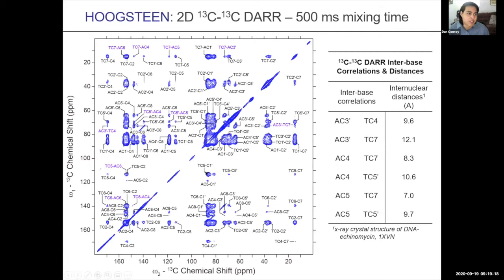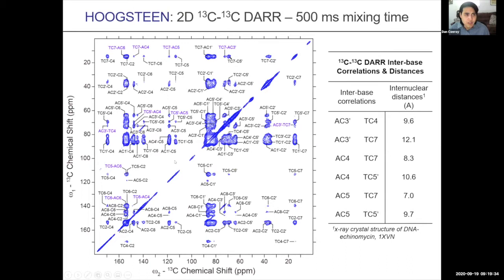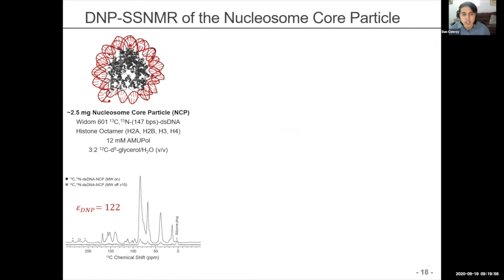The Hoogstein spectra actually has significantly more correlations than the Watson-Crick form, which makes sense because the Hoogstein form is more constricted so things are generally closer together. However, we don't see any one particular peak we can pull out and identify as one form versus the other from the DARR data — we can only use it as a qualitative observation that the Hoogstein form has everything closer together.